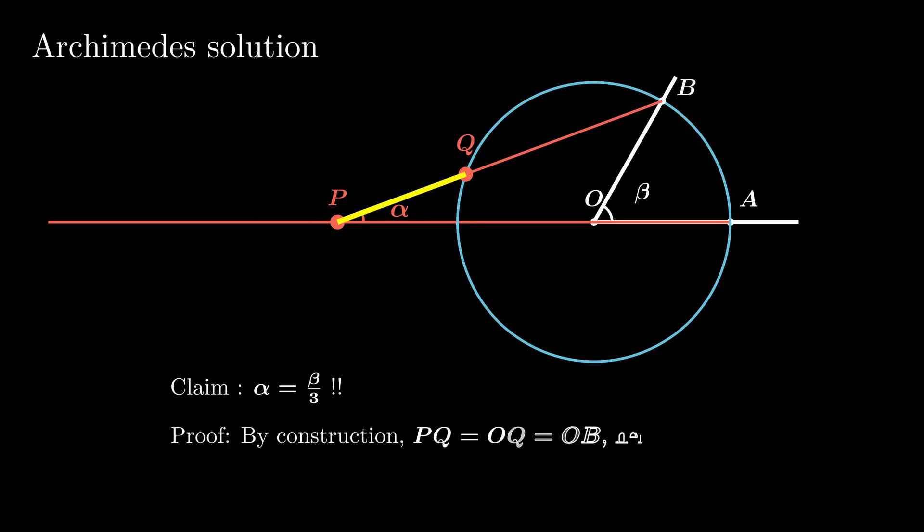We claim that the angle QPO is one third of the angle beta. Indeed, by construction, we have PQ equals to OQ equals to OB, which gives us two isosceles triangles. Easy angle tracing shows us the beta is three times alpha.